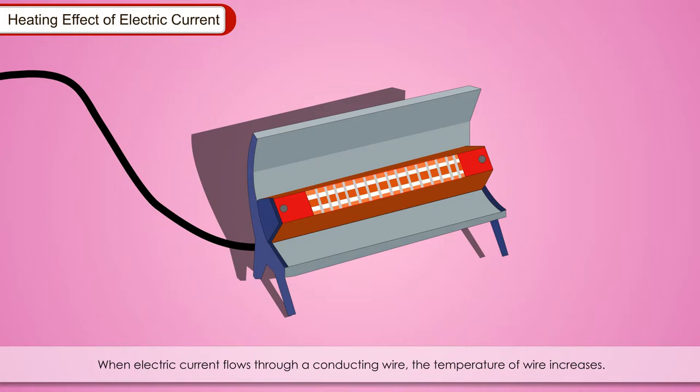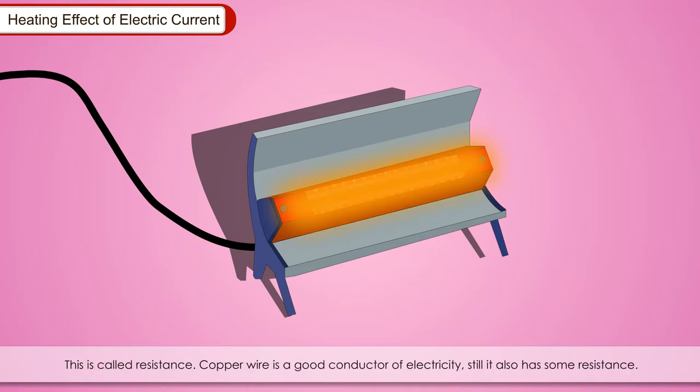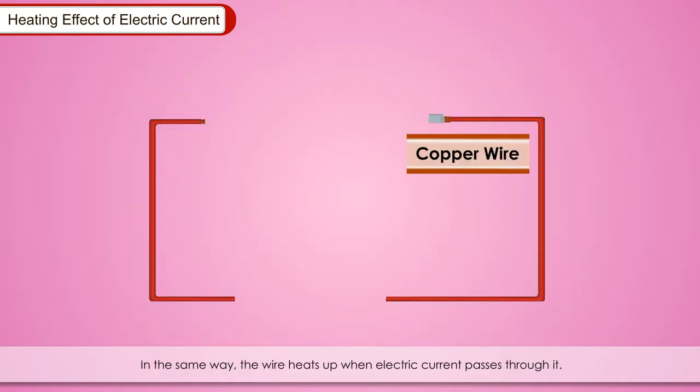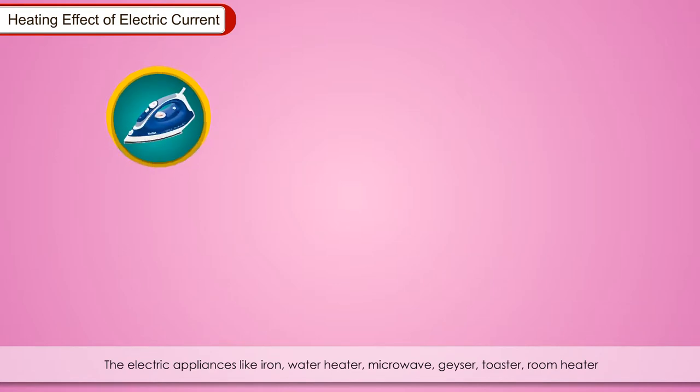When the electric current flows through a conducting wire, the temperature of wire increases. This is called heating effect of electric current. This is because every material resists the flow of electric current that passes through it. This is called resistance. Copper wire is a good conductor of electricity. It is just like rubbing of our hands against each other produces some heat and our palms become warm. In the same way, the wire heats up when electric current passes through it. This is due to the heating effect of electric current. The resistance can be compared with the force of friction.